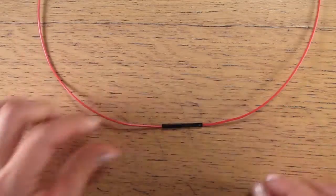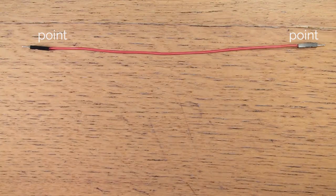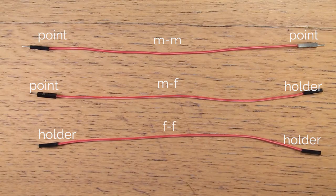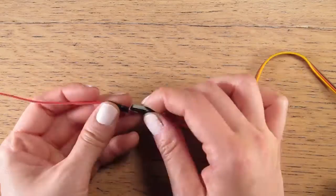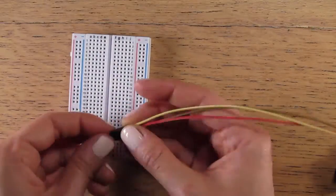Depending on what you need, you can get male-male jumper wires, male-female jumper wires, or female-female jumper wires. Most components have some kind of standard connector at one end, making it easy to plug them into your breadboard's wire holders with one of these wires.